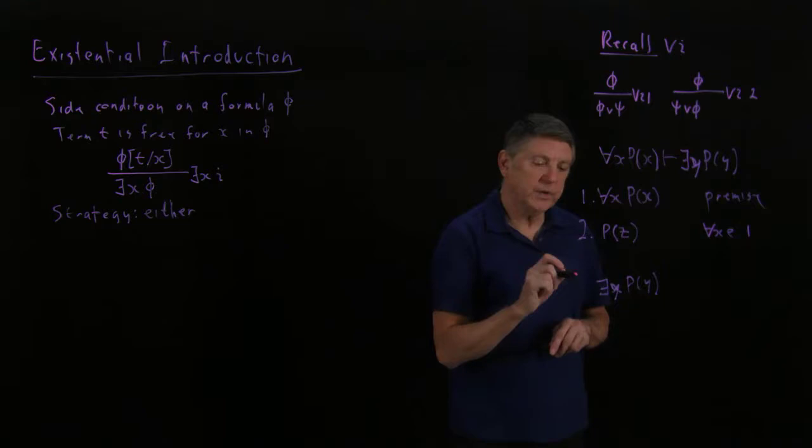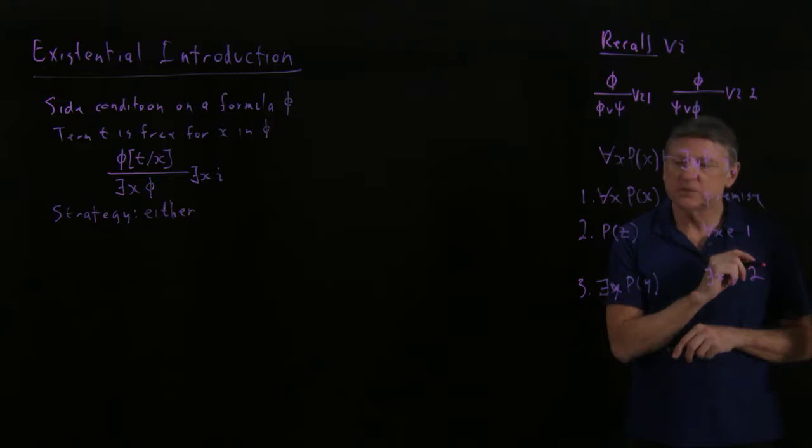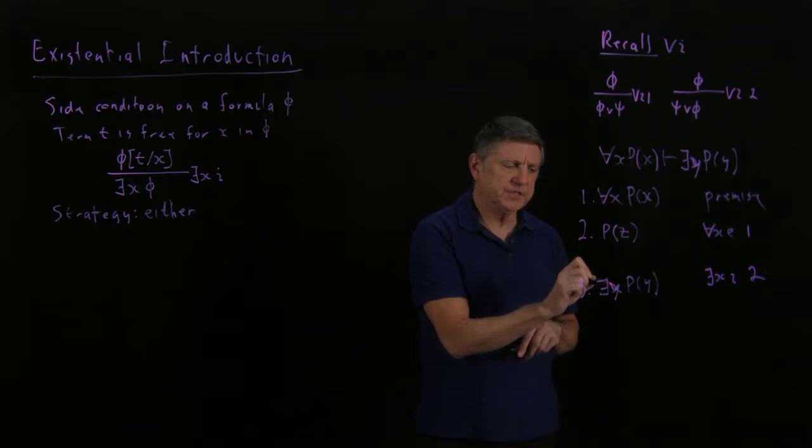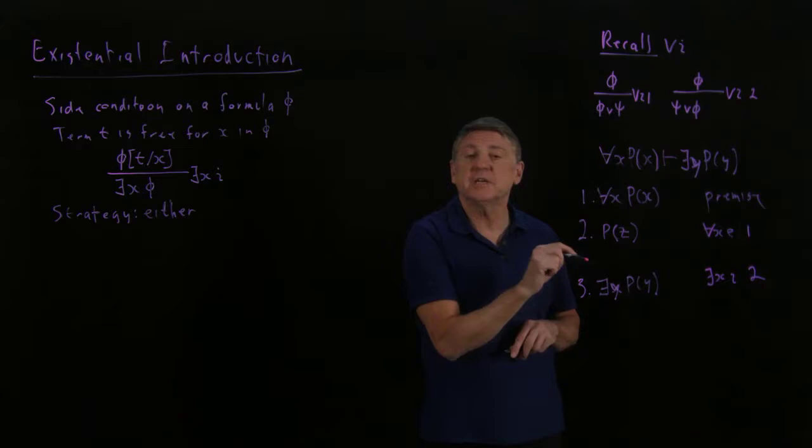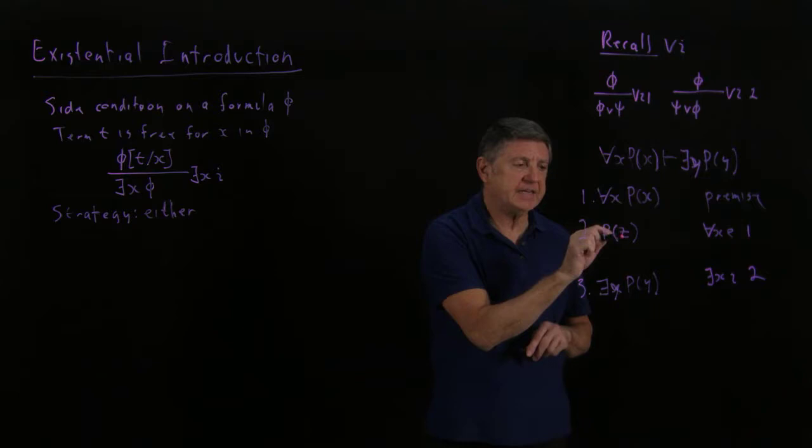Is that true here? Yes. So we could then say that this proof is complete by saying that is existential introduction based on line two. Now, when I said that this strategy could be either, what I mean is we could have reasoned if we have there exists a y such that y has property p, I could say, well, I'll just introduce a brand new variable and I'll call it z. Could be w, could be almost anything as long as it isn't x or y.